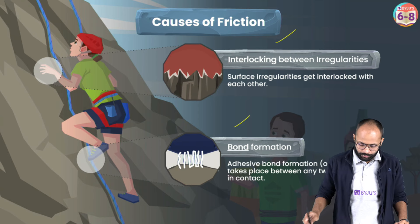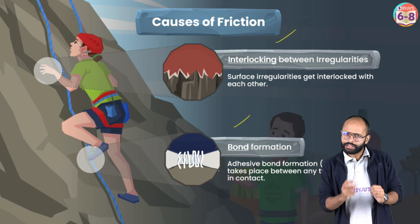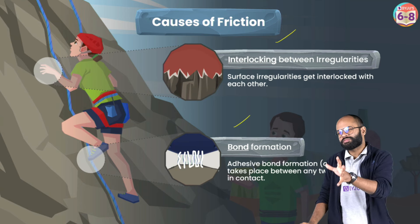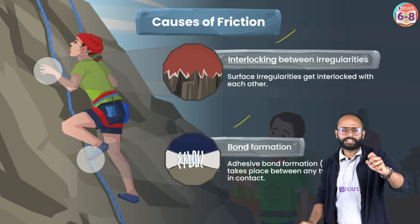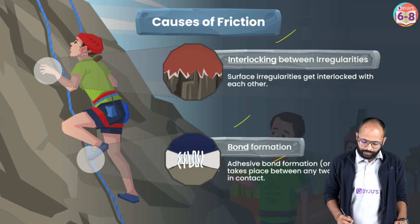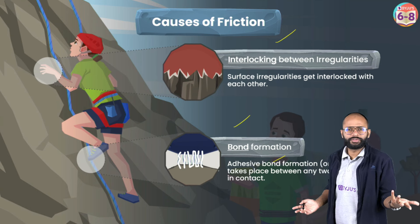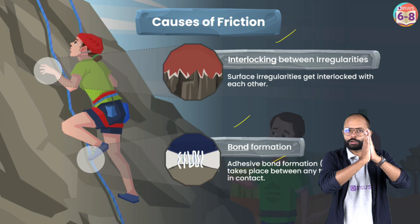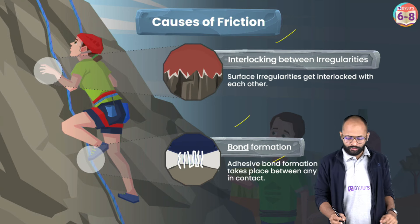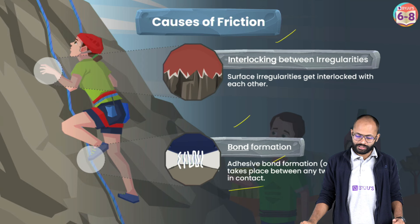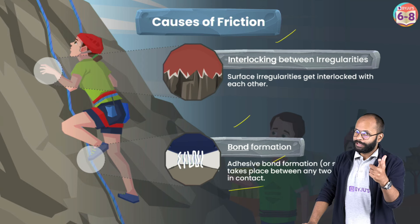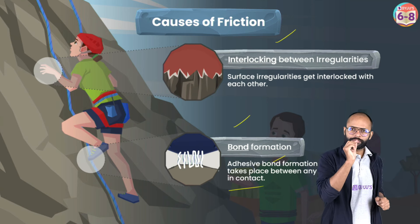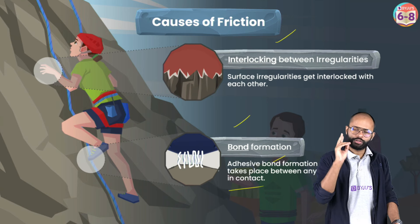The second cause is bond formation. When two surfaces are very close to each other, there are small attractive forces that come into play — we call them small, temporary bonds. These are adhesive bonds, like adhesives or glue, that form between surfaces when they're very close together. So adhesive bond formation or stickiness takes place between any two surfaces in contact. There are two reasons for friction: interlocking and adhesion.